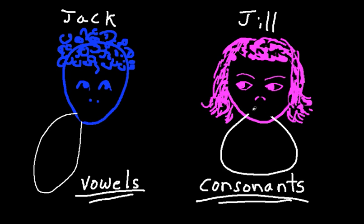First let's let Jack say five vowel sounds, and you observe and actually imitate the vowels that he says. See what your mouth is doing when you make those vowels. Then we'll have Jill do the same with consonants. I'm going to draw Jack and Jill's mouth as they speak so we can see what the mouth is doing.